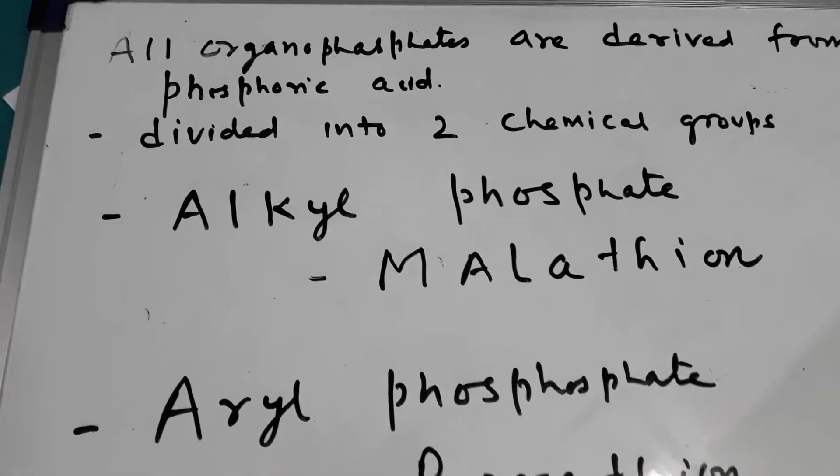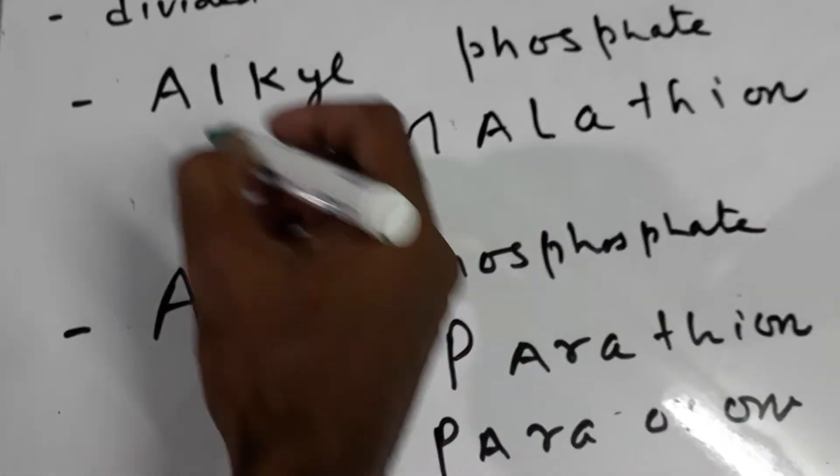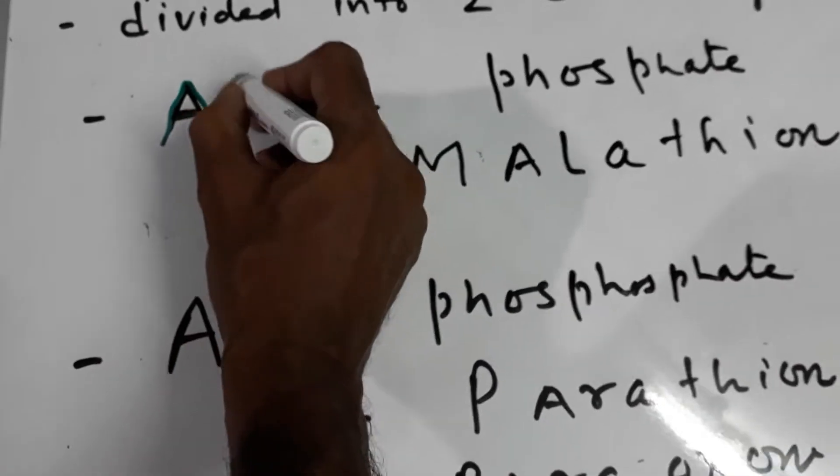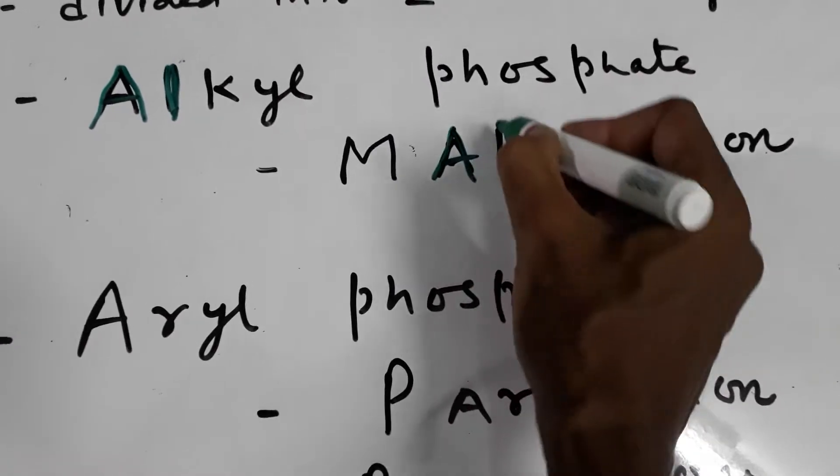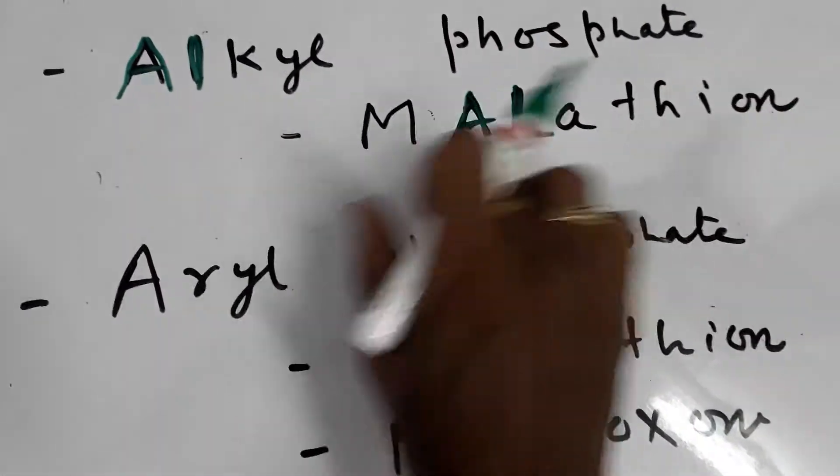Now, I will tell you the trick to remember. In Alkyl, here I am writing Alkyl-Al, and in Malathion also there is Al. So, Alkyl-phosphate is Malathion.